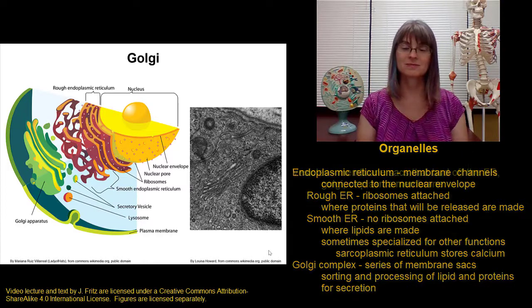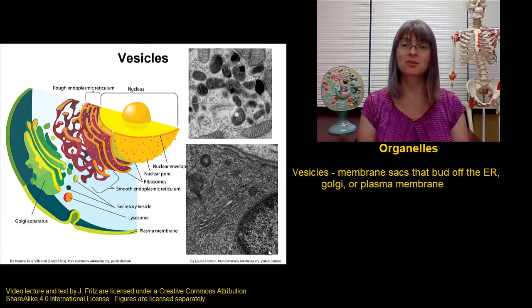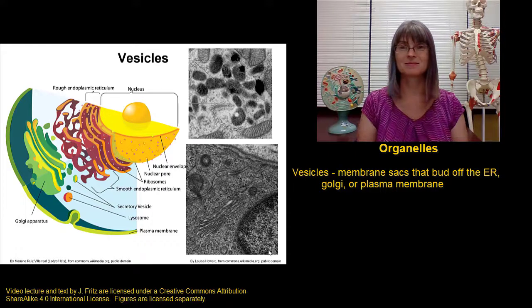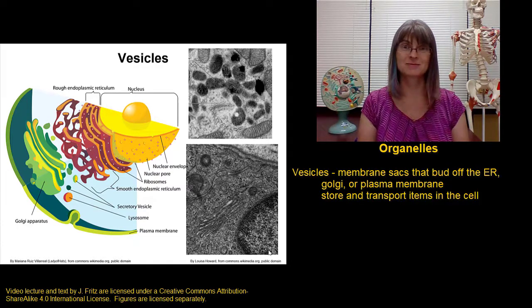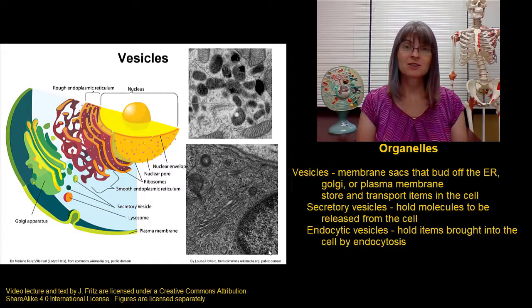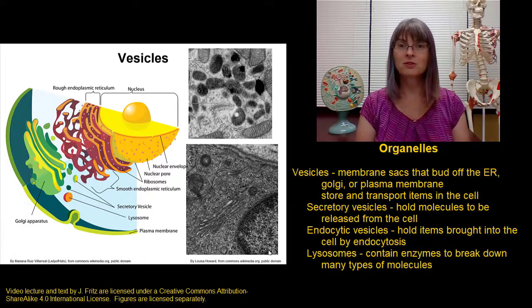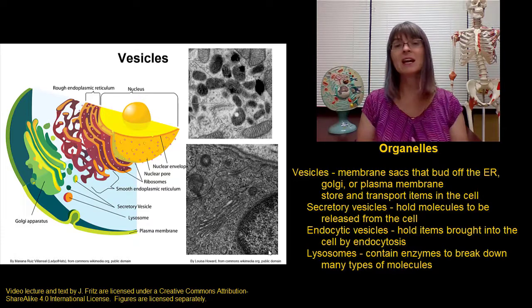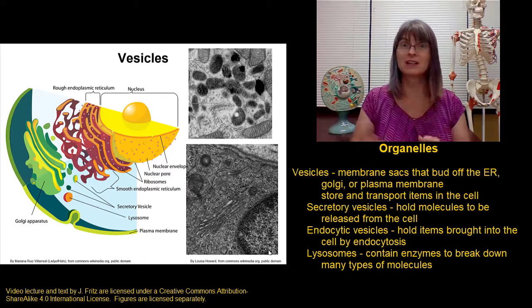Vesicles are little membrane sacs or membrane bubbles that bud off existing membranes in the cell. They can bud off the plasma membrane during endocytosis, or they can bud off the endoplasmic reticulum or the Golgi complex. In general, vesicles are important for storing and transporting things. Secretory vesicles bud off the Golgi and hold things that are going to be secreted to the outside of the cell. Endocytic vesicles form during endocytosis to bring something into the cell. Lysosomes are a special sort of vesicle that contain a lot of digestive enzymes — very powerful enzymes that can break down just about anything a cell can bring in — so they have to be carefully contained within a lysosome to keep them from breaking down the parts of the cell itself.